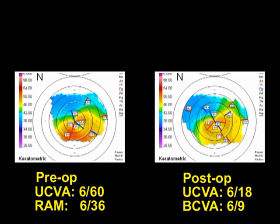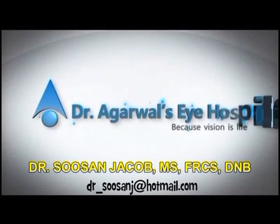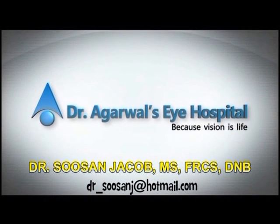This was a case of aberopia caused by increased higher-order aberrations secondary to keratoconus. We were able to correct it by getting the corneal topography and keratometric maps to be more regularized, thereby leading to an improvement in the patient's vision. INTACS combined with either conventional cross-linking or contact lens-assisted collagen cross-linking is therefore a great way to treat mild to moderate cases of keratoconus. Thank you so much.